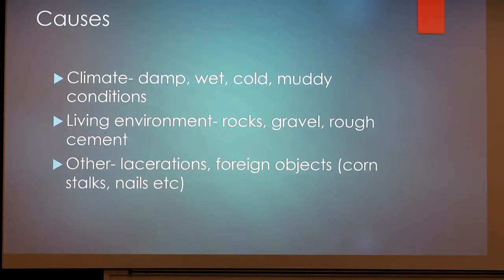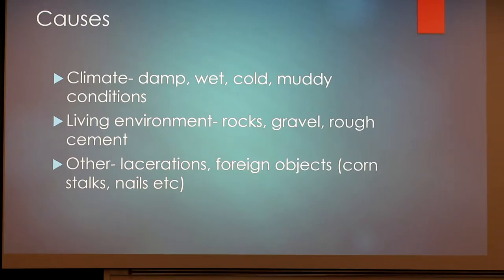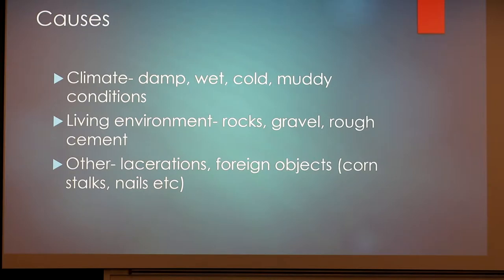How the causes happen comes down to three major things. The first is climate — damp, wet, cold, and muddy conditions. That's basically Indiana and the Midwest to a T. When you get around winter into early spring, the snow starts to melt and mud builds up. It doesn't happen as much out west — in a Texas feed yard it's dry and warmer, so you see less of it. Second is the living environment: rocks, gravel, rough cement can get up in there — anything causing a puncture or swelling to the inner digital skin. And third, lacerations: cuts or foreign objects like nails, corn stalks, or anything irritable to the skin.